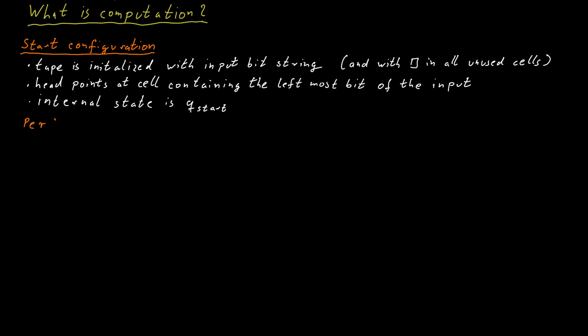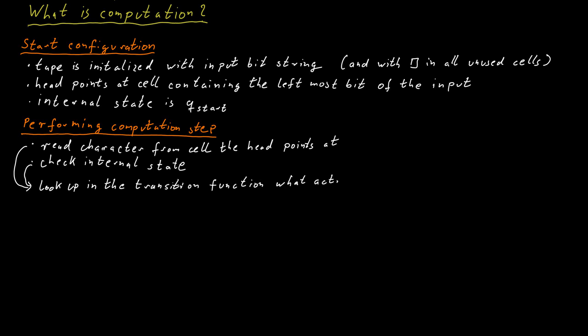Now to perform a computation step. The Turing machine reads the character that the head points to and looks at its internal state. It looks up in the transition function what internal state to switch to, what character to write and how to move the head. It carries out those actions, switching the internal state, writing the new character, moving the head left or right or staying where it is. And then the computational step is finished.